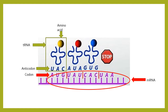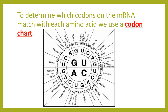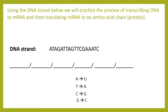We are going to do some practice for how to make a messenger RNA and how to make a protein. Write down these practice problems because this is exactly what you'll have to do for practice assignments and your test. To determine which codons on the mRNA match with each amino acid, we use a codon chart. We're going to break it down so you can go from a DNA sequence to a messenger RNA to a protein.